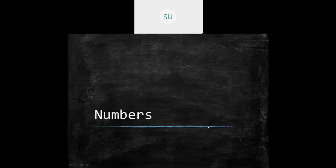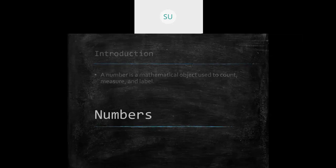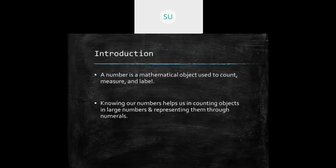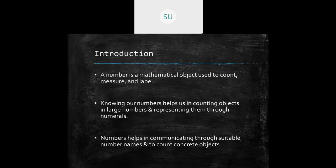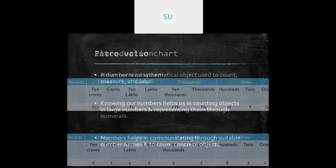Good morning students and welcome to today's class. In the last class we finished the chapter on large numbers, so today we'll do a quick recall of what we studied. Numbers are mathematical objects used to measure, count, or label. Numbers help us in counting objects, representing them through numerals — one, two, three, four, five written in figures are called numerals — and communicating through suitable number names.